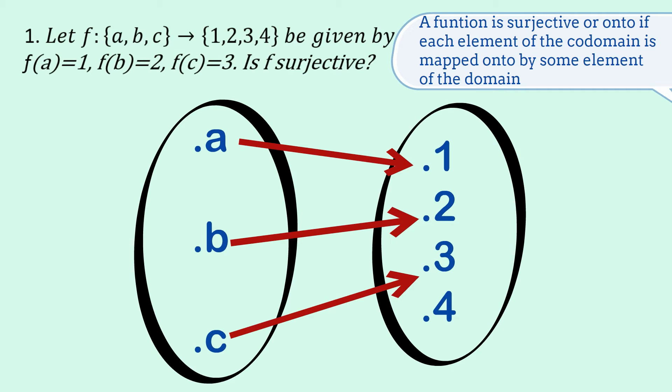Okay, so here's the definition: a function is surjective or onto if each element of the co-domain is mapped onto by some element of the domain.